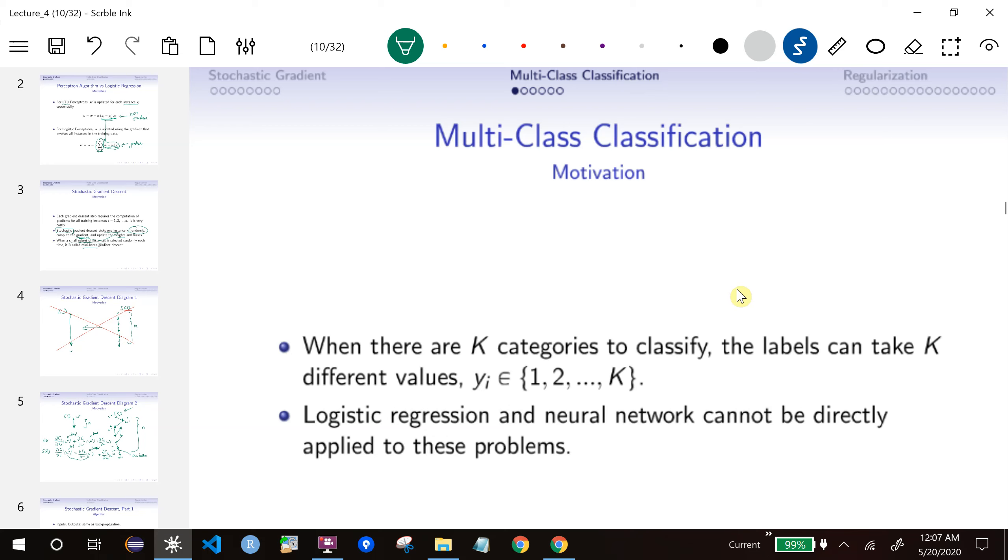In the previous lectures, we always have in the last layer one output, one activation, and it's between 0 and 1. So we cannot do classification with, say, three classes.